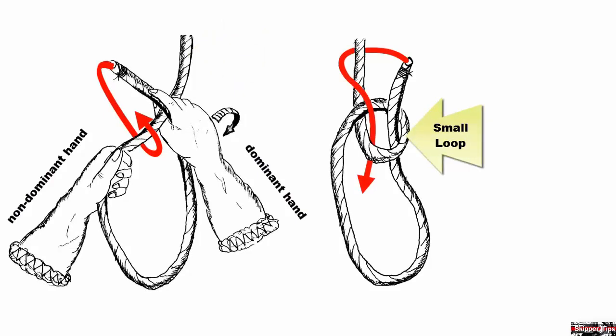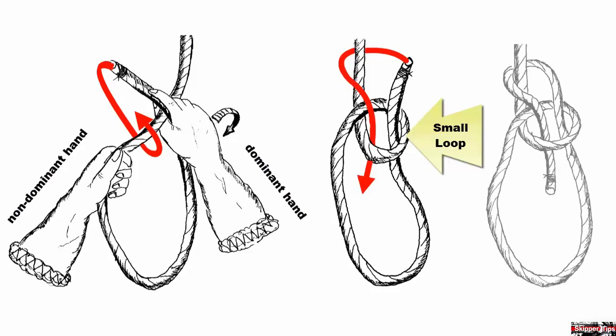Pass the bitter end around the standing part and back down into the small loop. Keep the bitter end four to six inches long and remove all slack. This will help prevent the knot from spilling or untying when shocked.